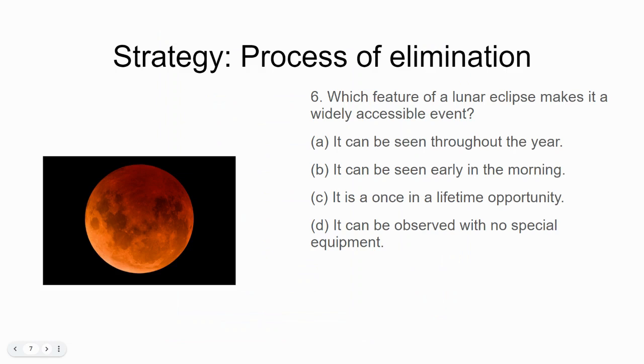The process of elimination allows me to immediately eliminate A and B because I know from reading the passage they were not correct. So that limits it to C and D, and I can then zero in and reread to determine that D is the correct answer. It is a widely accessible event because it can be observed with no special equipment.